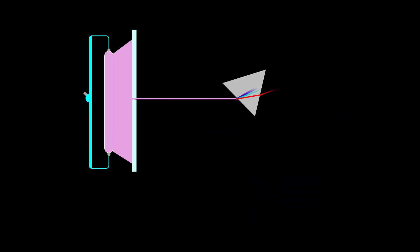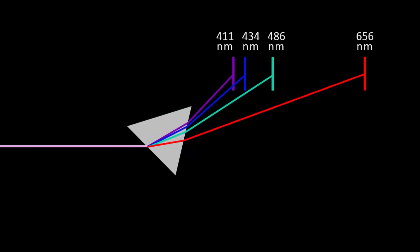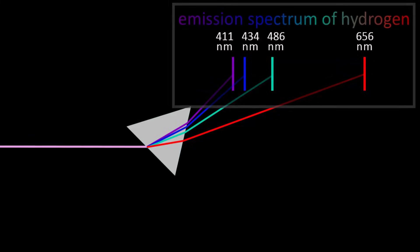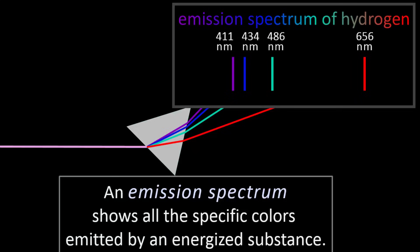But when we diffract or split hydrogen's pale pinkish color, we can see the colors that are actually being emitted by hydrogen atoms. Violet, blue, a sort of turquoise, and red all at specific wavelengths. This is the emission spectrum of hydrogen. An emission spectrum is all the specific colors emitted by an energized substance.